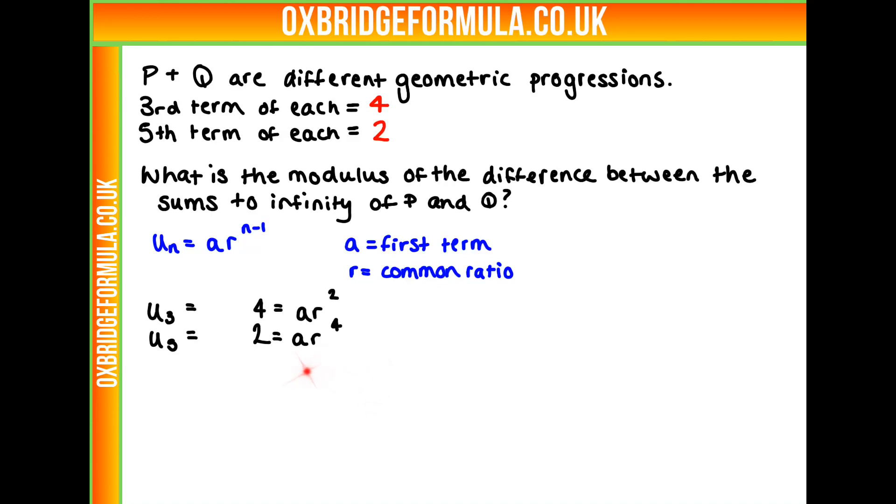Can we work out what a and r are using our two equations here? Let's treat them like simultaneous equations and divide them. Let's divide the bottom one by the top one. We're going to get 0.5 equals r squared, or r equals the root of a half.